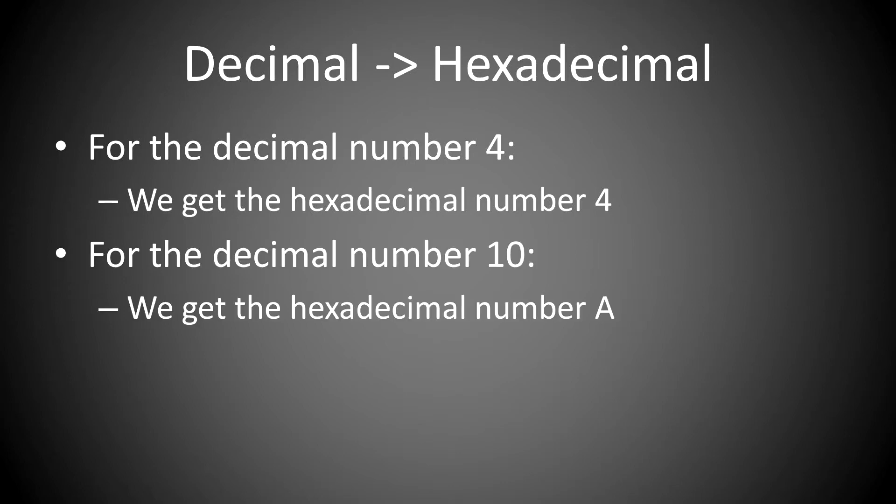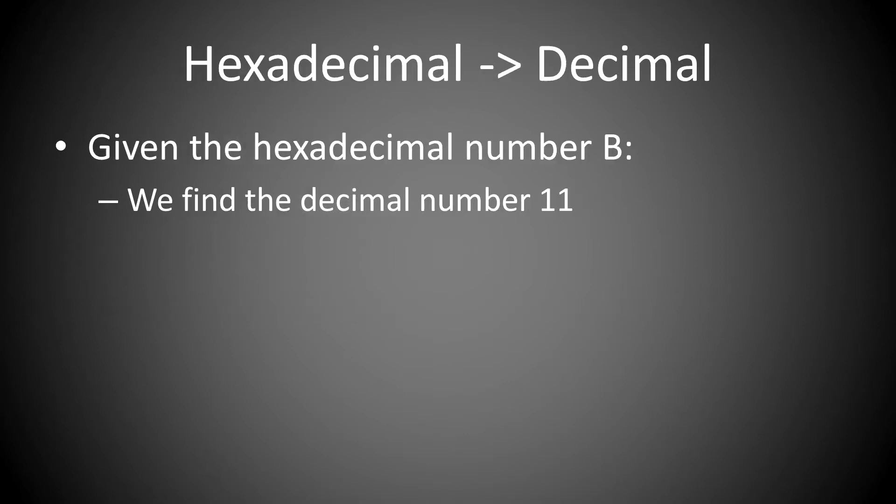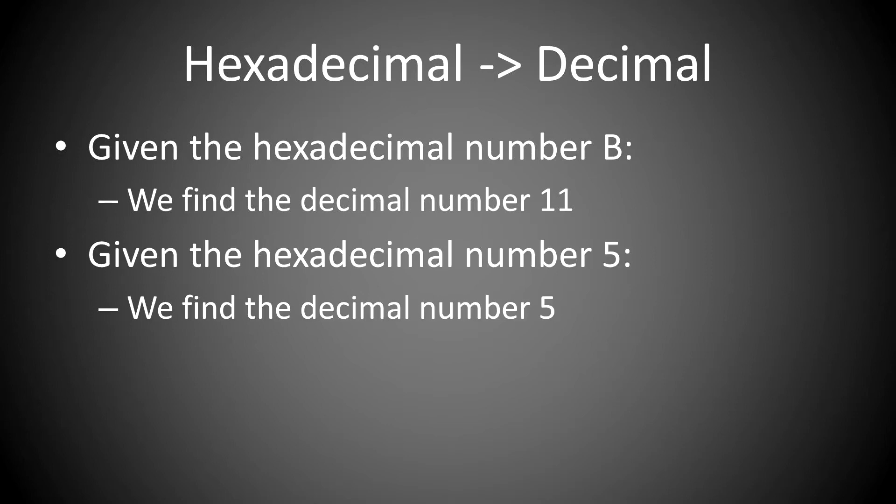For the decimal number of 10, we get the hexadecimal number of A. To do this process in reverse, given the hexadecimal number of B, we find the decimal number of 11, and the hexadecimal number of 5, we get the decimal number of 5.